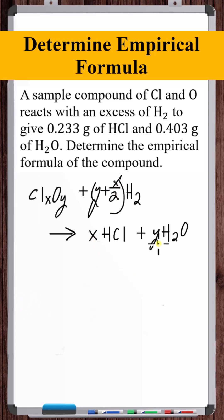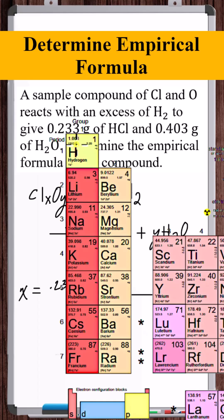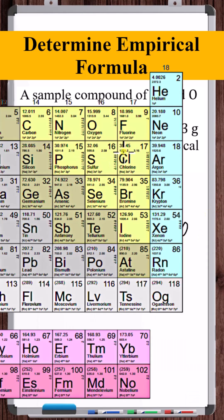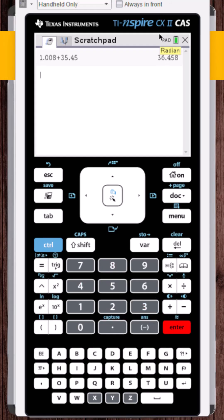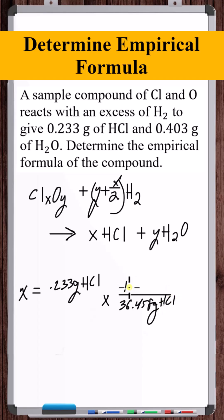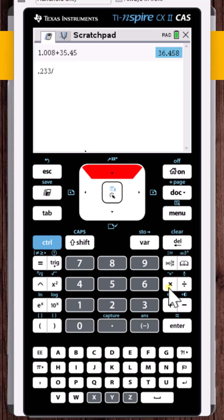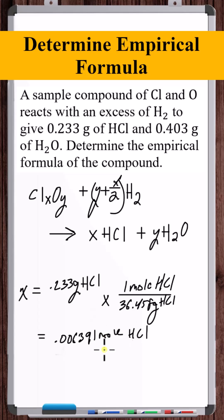Okay, but now we can solve for X and Y in moles, because we have the mass information of these two products. So X is equal to, we have 0.233 grams of HCl. The molar mass of HCl is 1.008 plus 35.45, 36.458, 0.006391 moles is X.